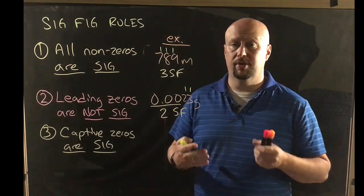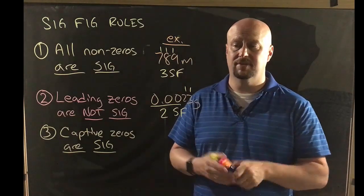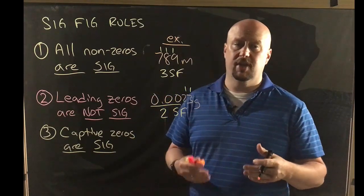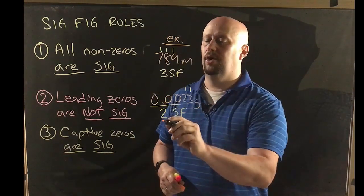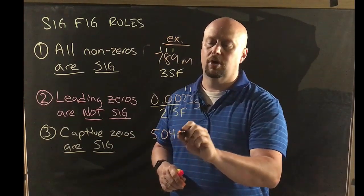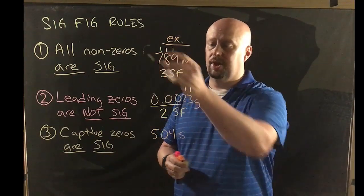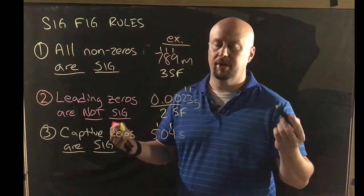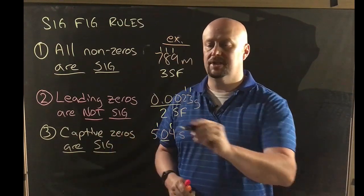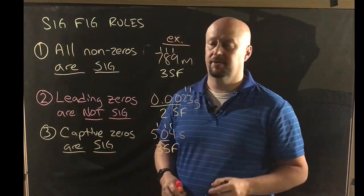Rule number three: captive zeros are significant. Captive zeros are zeros that are in between other significant digits — in between non-zeros. So if we have 504 seconds, the 5 and the 4 are non-zeros and are clearly significant. The question is, what about that zero? Well, that zero is captive — it's in between two non-zeros — so that zero is significant as well.